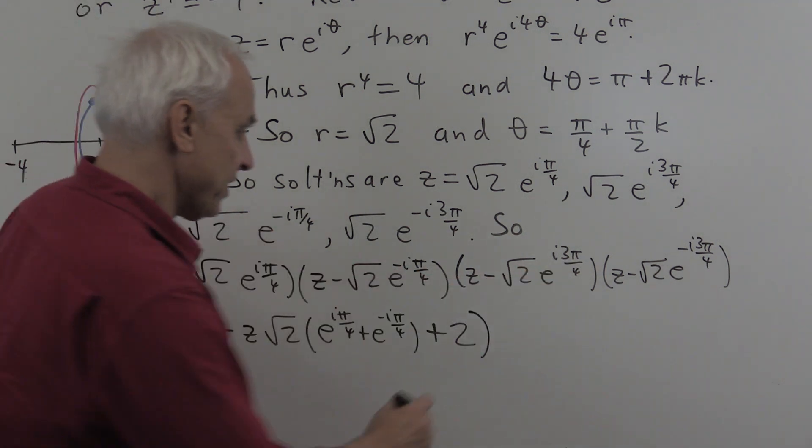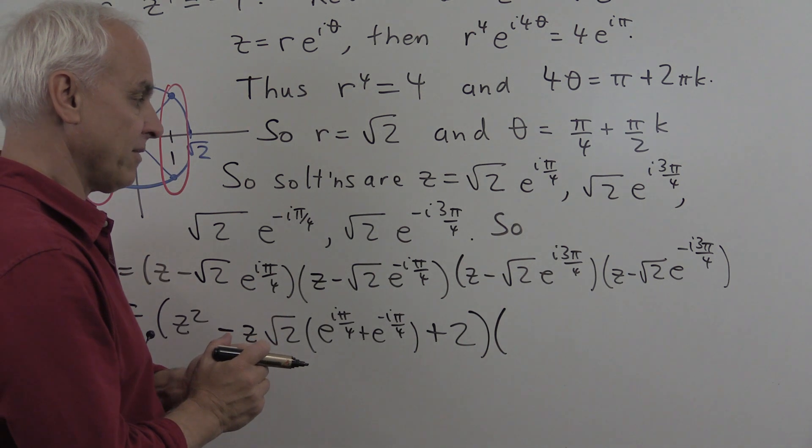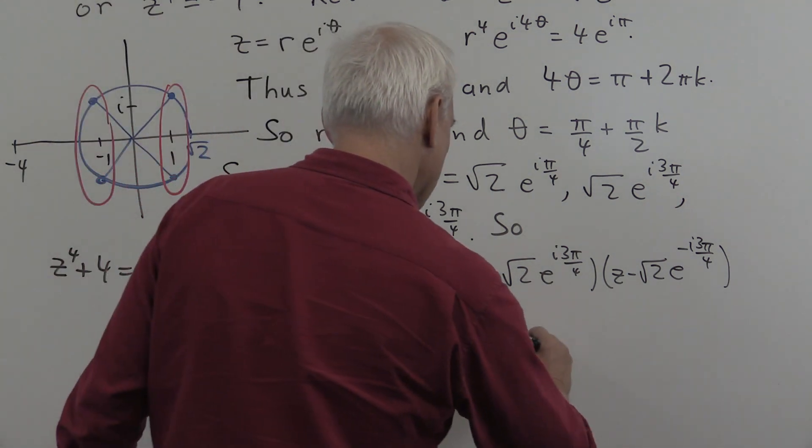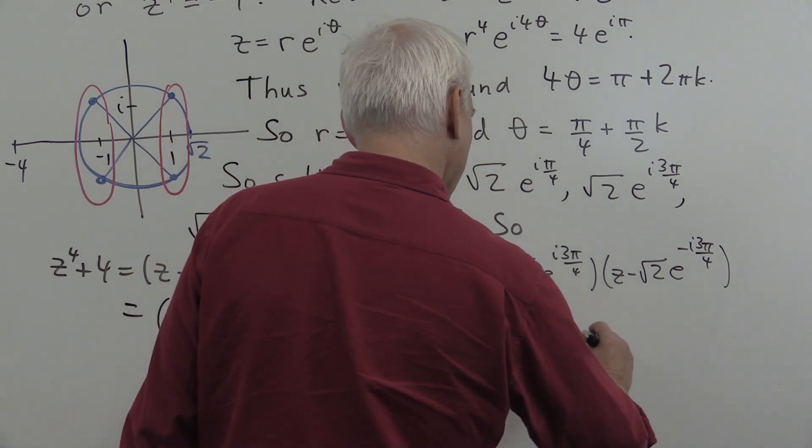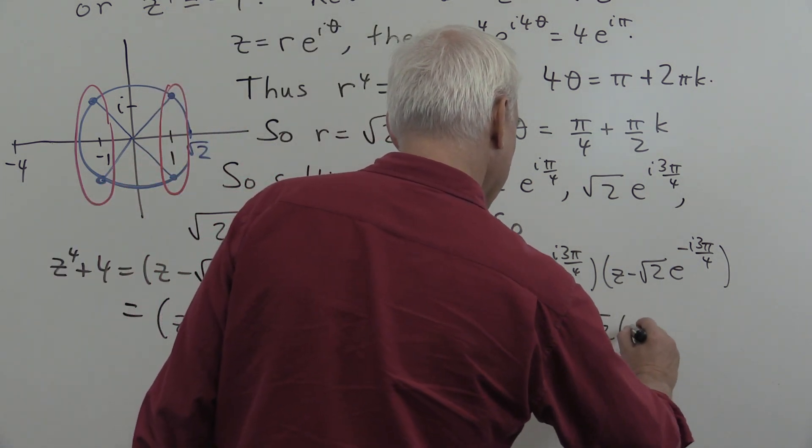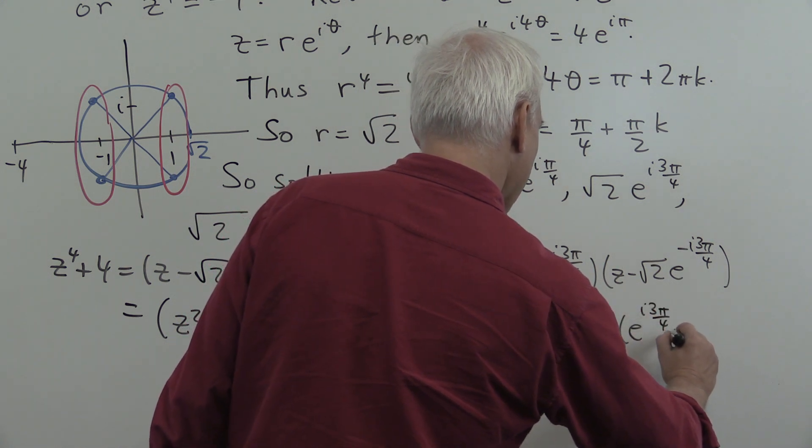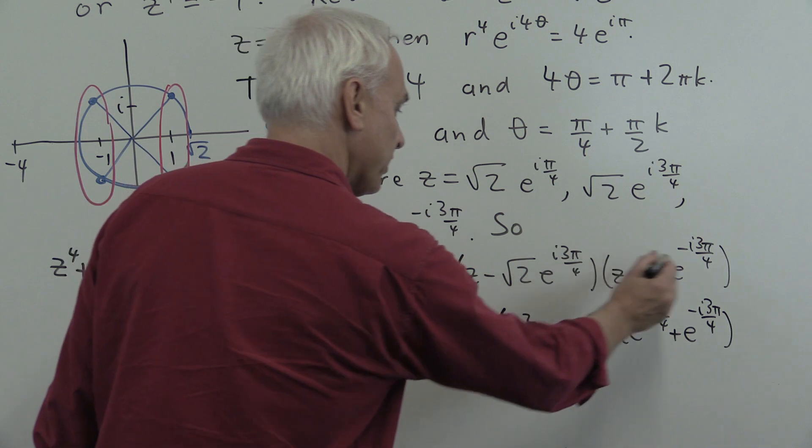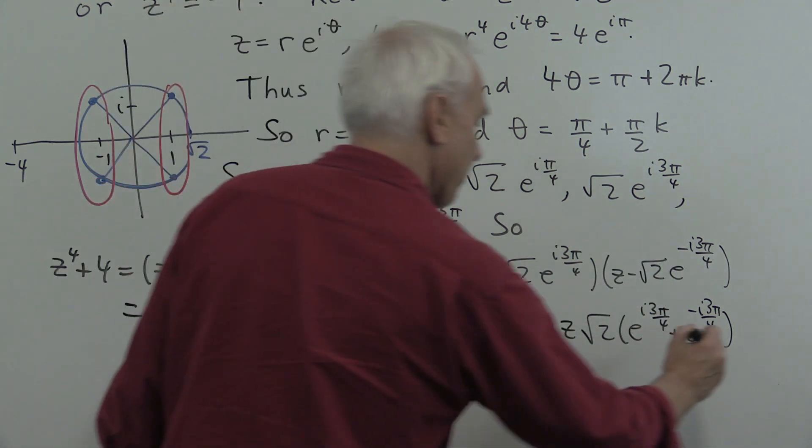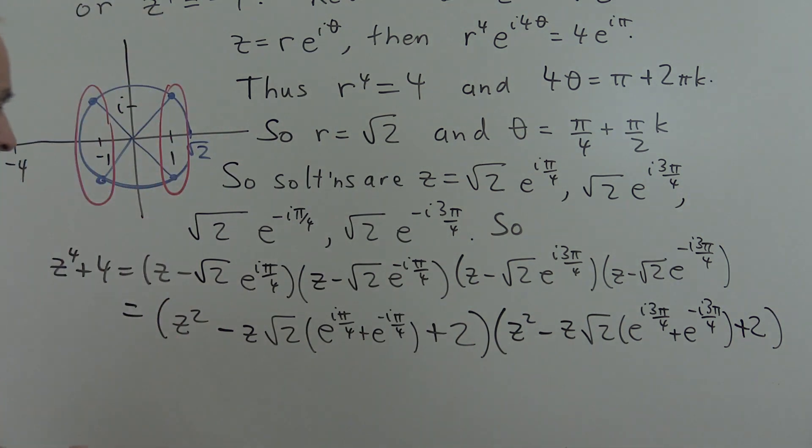Let's do the same kind of thing for this other pair of complex conjugate factors. So we're going to have a z squared and then minus z times root of 2 times e to the i 3 pi on 4 plus e to the minus i 3 pi on 4, and then the product of these two last things is just plus 2.